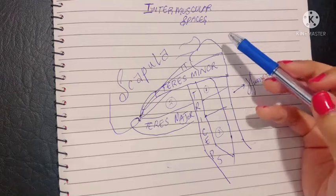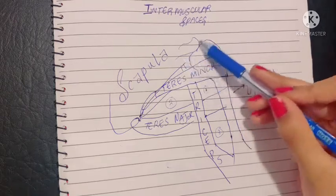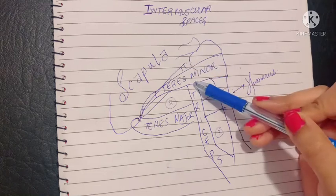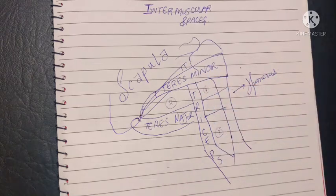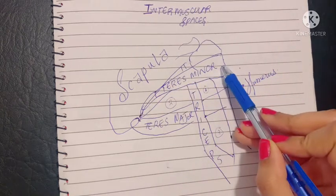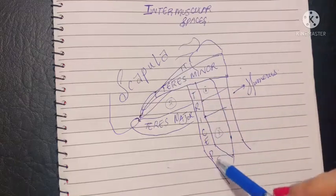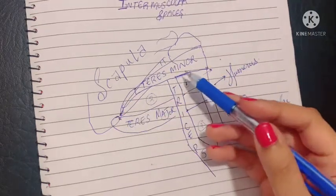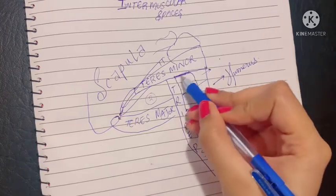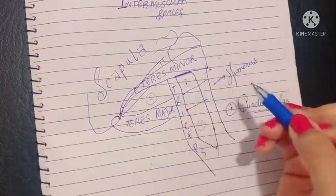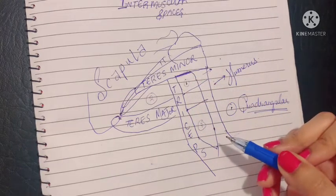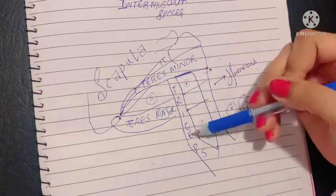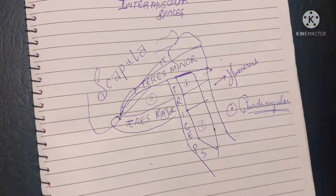Firstly, we need to remember that anterior to the shoulder joint is the subscapularis muscle, while posterior to the shoulder joint is the teres minor muscle, and medial to the entire humerus is the triceps brachii muscle. If you have this image in your mind, it will be very easy to remember the boundaries of each of these spaces. Keep in mind these three T muscles that form the boundaries.